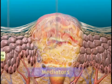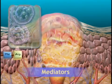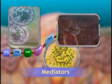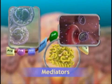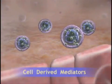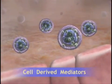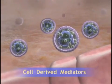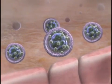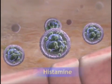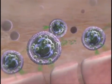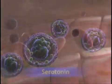Concurrent with the events of the vascular and cellular stages, chemical mediators release bioactive agents that act to mediate the inflammatory response. Mediators are derived from the cells or from plasma. One of the first mediators of an inflammatory response is a cell-derived mediator, histamine, found in high concentrations in the mast cells of connective tissues adjacent to blood vessels, as well as in blood basophils and platelets.